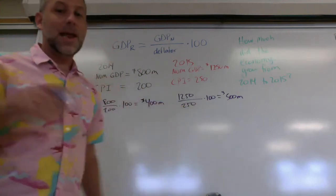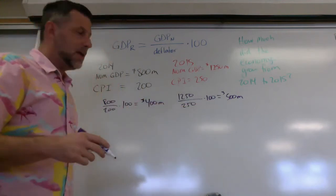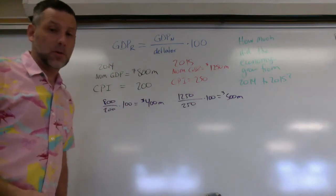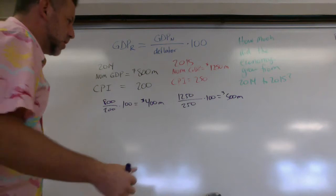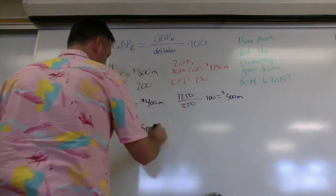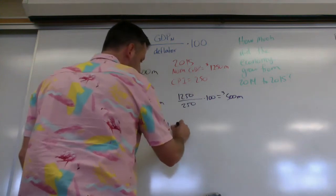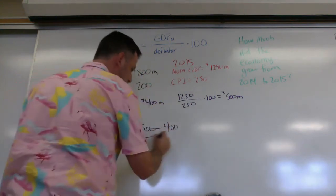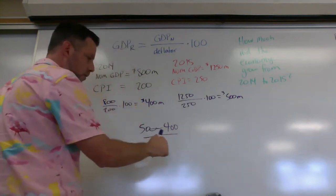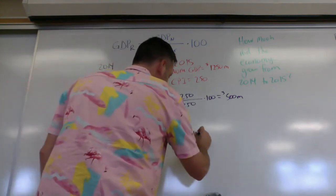So now that I have my real GDPs, now I can calculate my growth. And to do that, I'm going to use my growth formula, new minus old over old times 100. So my new is 500, minus 400 divided by 400, new minus old over old times 100.